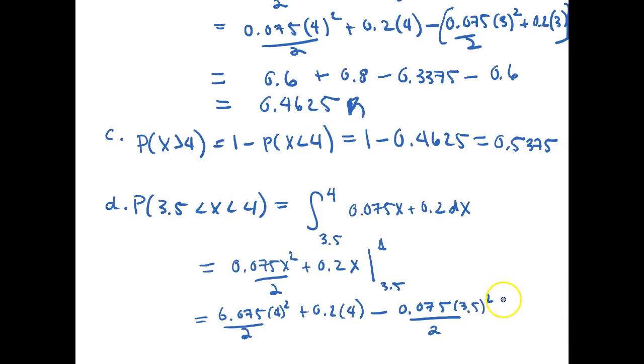right here this is 3.5, these are our lower bound. So 3.5 squared, little mistake there, 0.2 times 3.5, that's easily fixed. So plug that in.